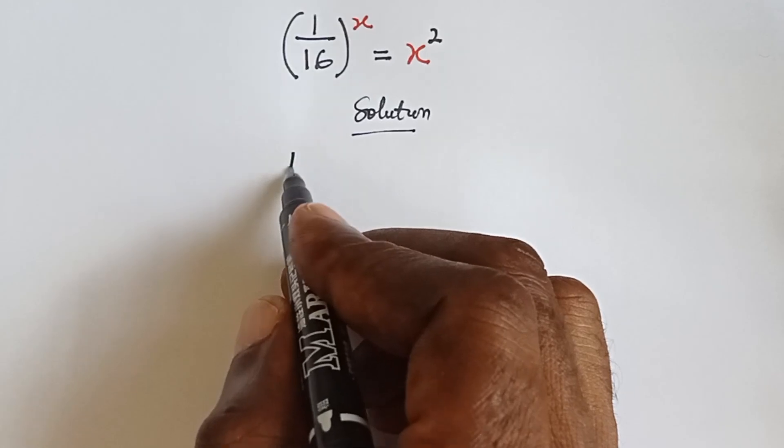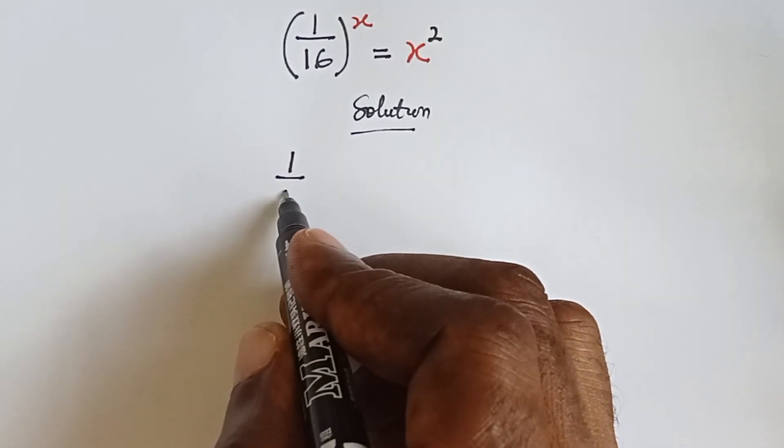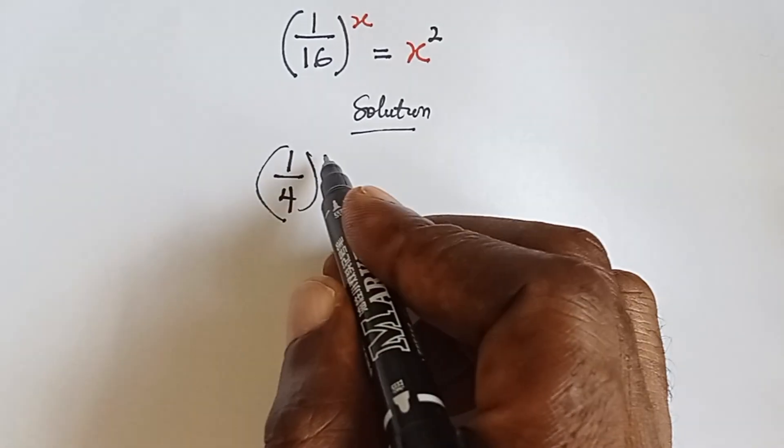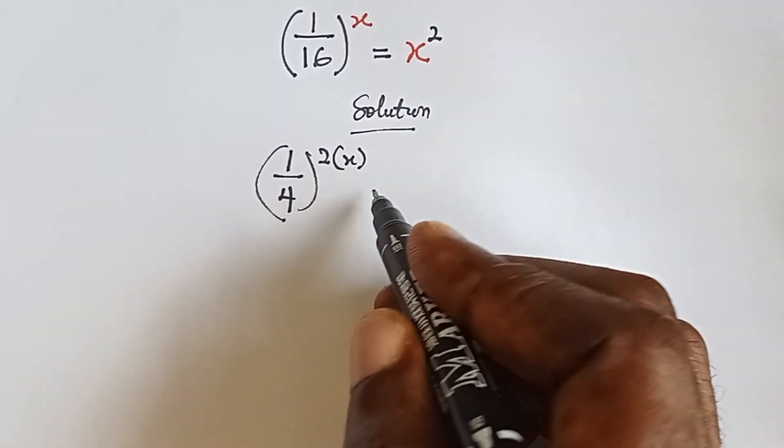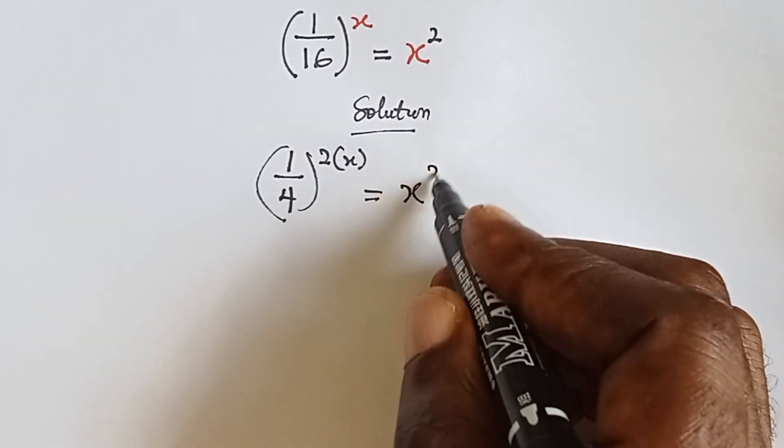Alright, so we have 1 over 16, which can also be written as 1 over 4 raised to power 2. Then we can put the x equals to x raised to power 2.